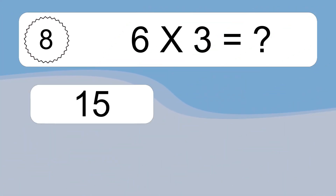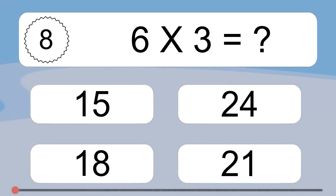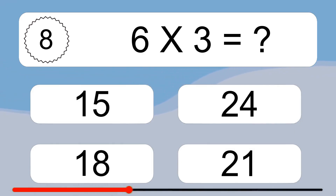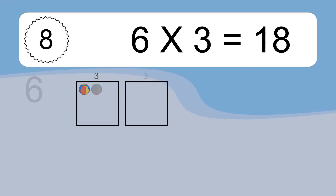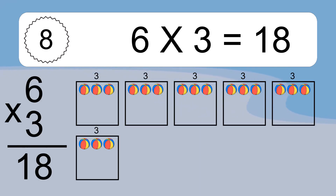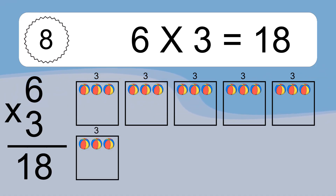6 times 3 equals what? 6 times 3 equals 18. We have 6 boxes, and each box has 3 colorful balls inside. If you count all the balls in all the boxes together, you will have 6 times 3 balls. This equals 18 balls.